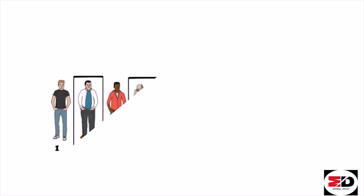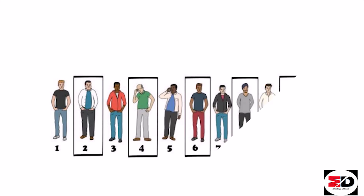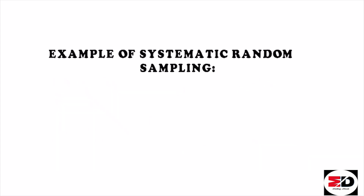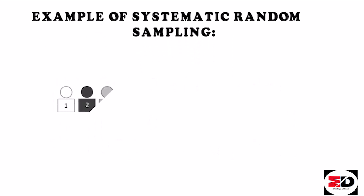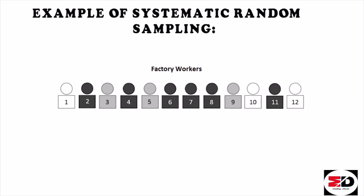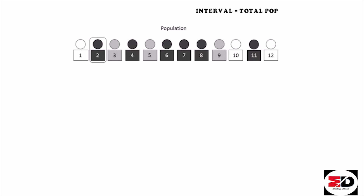In systematic random sampling, a random starting point is first selected from the list, and then individuals are selected at a fixed periodic interval — also called fixed sampling interval. For example, I have a list of 12 factory workers but my sample size is only 4. I will first randomly select a starting point — let's say I selected number 2. Then I calculate my fixed interval by dividing the total population (12) by the sample size (4), which gives an interval of 3.